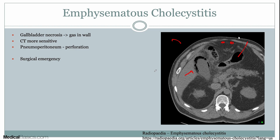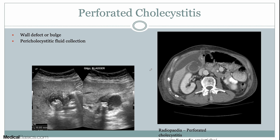The final complication is perforated cholecystitis. These all exist along a spectrum and can lead to perforation. What you're looking for is an actual focal wall defect — a discontinuity in the gallbladder wall — with spillage of biliary contents and a pericholecystic fluid collection forming outside the gallbladder. You may see a focal discontinuity in the gallbladder wall with surrounding pericholecystic fluid. These are more severe complications of acute cholecystitis.